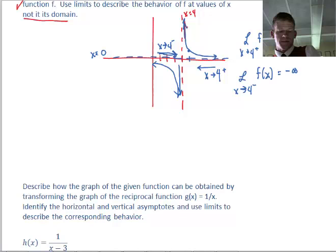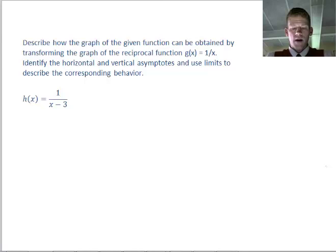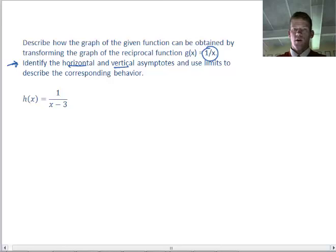Let's move along and look at another example. Let's say that we have, well, let's look at the directions. Describe how the graph of the given function can be obtained by transforming the graph of the reciprocal function. So that's kind of what we did in the last problem. Identify, in this case, both horizontal and vertical asymptotes, and use limits to describe the corresponding behavior. So, this is a transformed hyperbolic function.